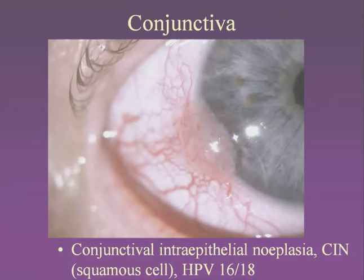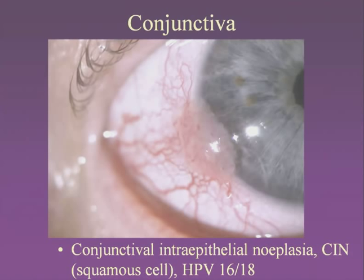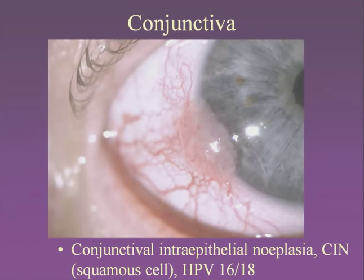This looks like a pterygium but it's actually malignant. This is a gentleman who is an arc welder with intense UV exposure, a pipe smoker, and worked in a chemical factory. He developed squamous cell conjunctival intraepithelial neoplasia — skin cancer of the conjunctiva. This was excised and he's doing well. This is thought to arise from human papillomavirus types 16 and 18, which are implicated in all sorts of cancers such as cervical cancer.